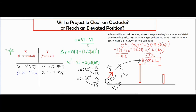On the horizontal side we only need two values because there are three variables total and the formula is simpler. Using delta x = V·t, we have 17 = 7.5·t. Cross-multiplying and dividing gives t = 2.27 seconds. I wrote that in the center because time has no direction — it's just the duration the projectile is in the air — so it can be used in either the X or Y column.